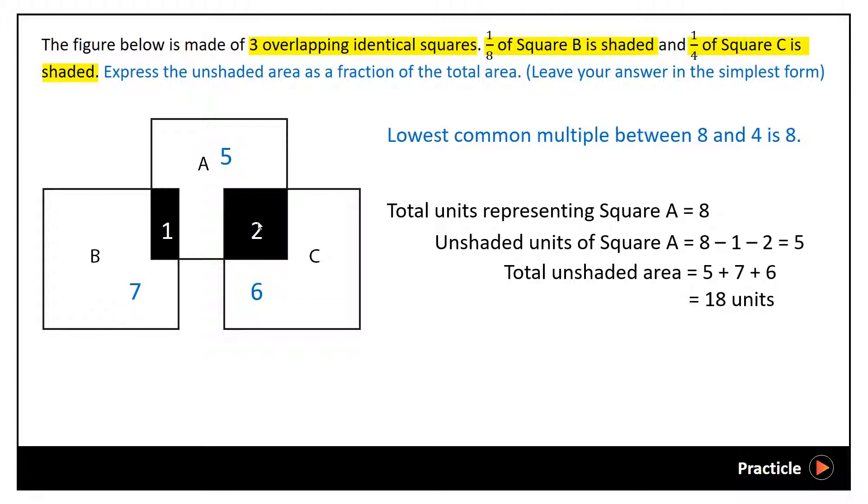So the right way to find the total area would be to take the area of these two squares, 8 plus 8, and then you add it to the remaining unshaded part, which is 5. So the total area would be 21.